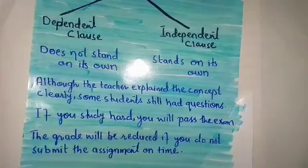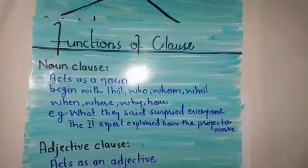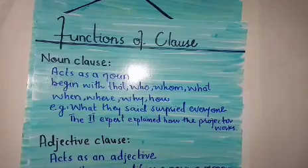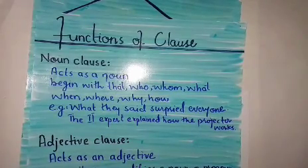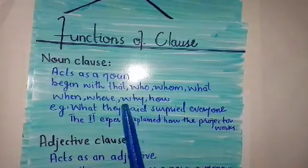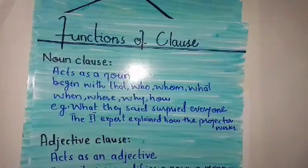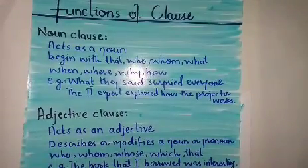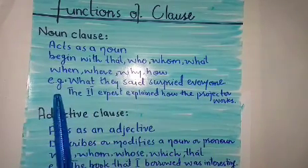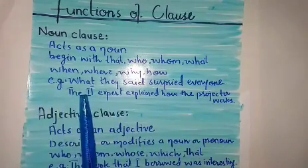Now there are different functions of clauses. First, we have the noun clause. A noun clause acts as a noun. We previously discussed the noun phrase; now we are discussing the noun clause. A clause must have a subject and a verb. A noun clause acts as a noun and begins with words such as: that, who, whom, what, when, where, why, how.